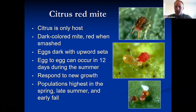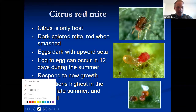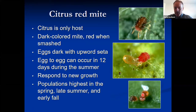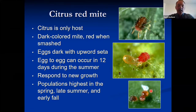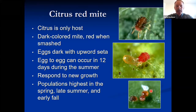The other key identification feature: the eggs have a round, dark-colored appearance with a little hair — a seta — sticking up off the top. With a hand lens you can definitely see that. The mite has white dots on its back and dark-colored eggs with the little hair coming up from them. This mite can go from egg to adult in about 12 days in the summer, and it responds to new growth, really liking the newer, tender leaves. Highest populations occur in the spring; they die off in summer, then return in late summer and early fall.